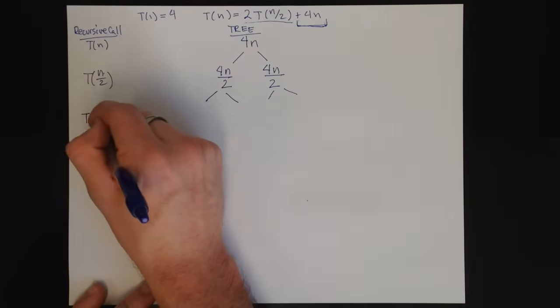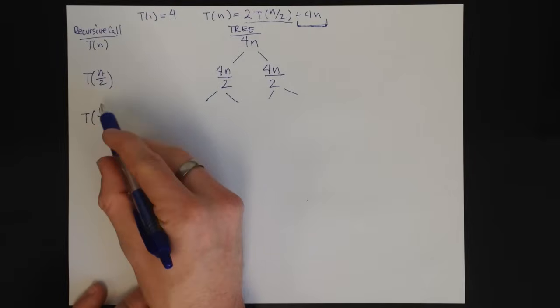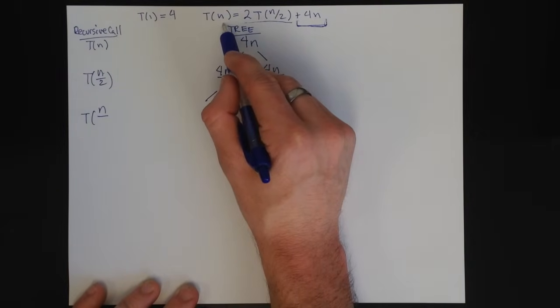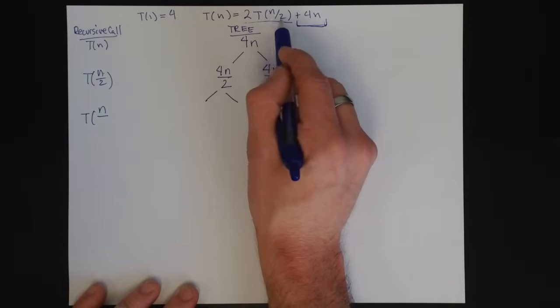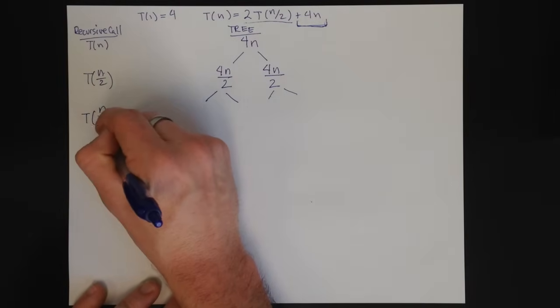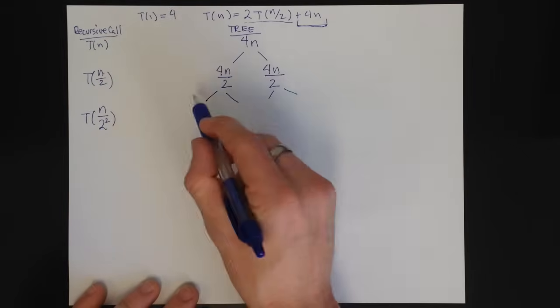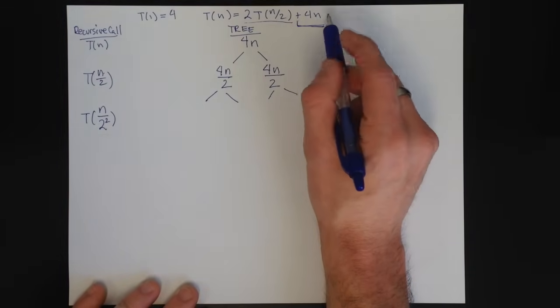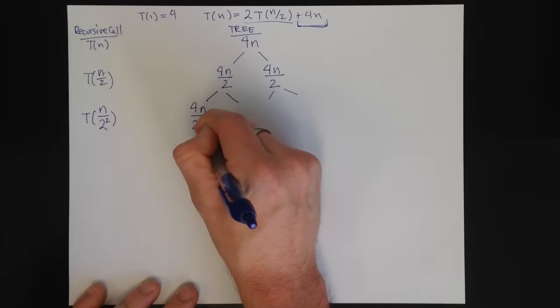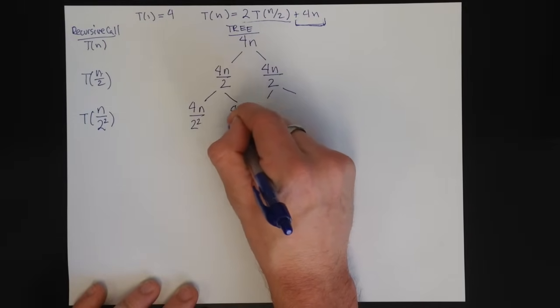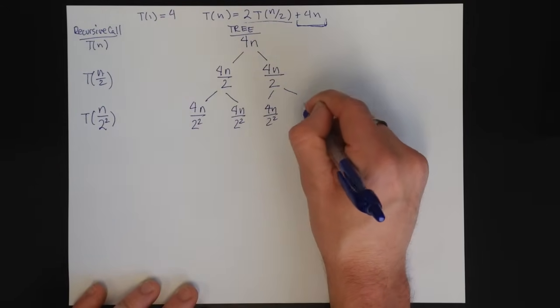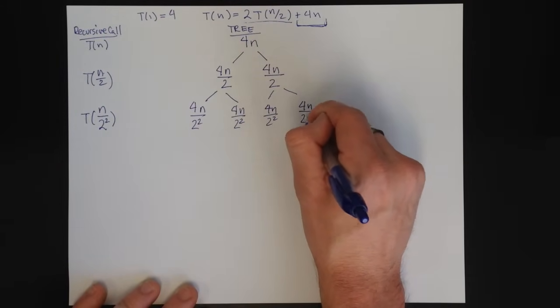Then at T(n), and now what is this? If I plug in n/2, if that's the call I'm interested in, the next recursive call is n/2 over 2, which is n/2^2. And the amount of work I get at the n/2^2 call is 4n/2^2, 4n/2^2, 4n/2^2, and 4n/2^2.